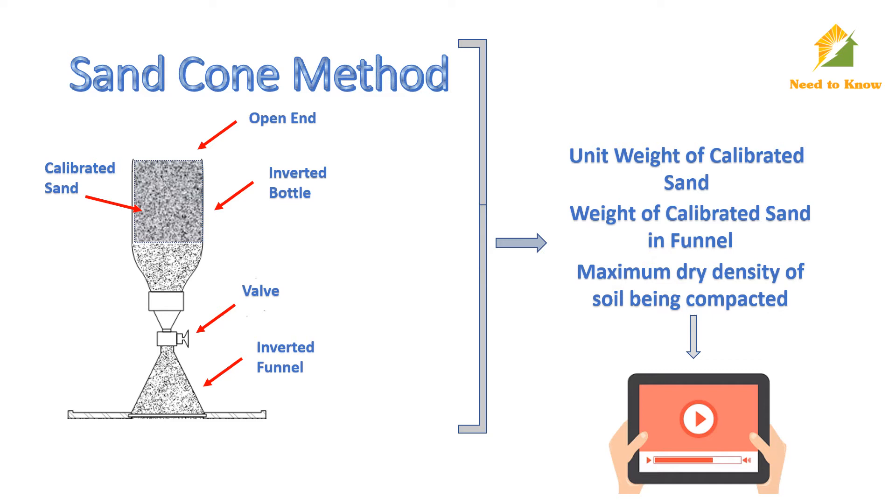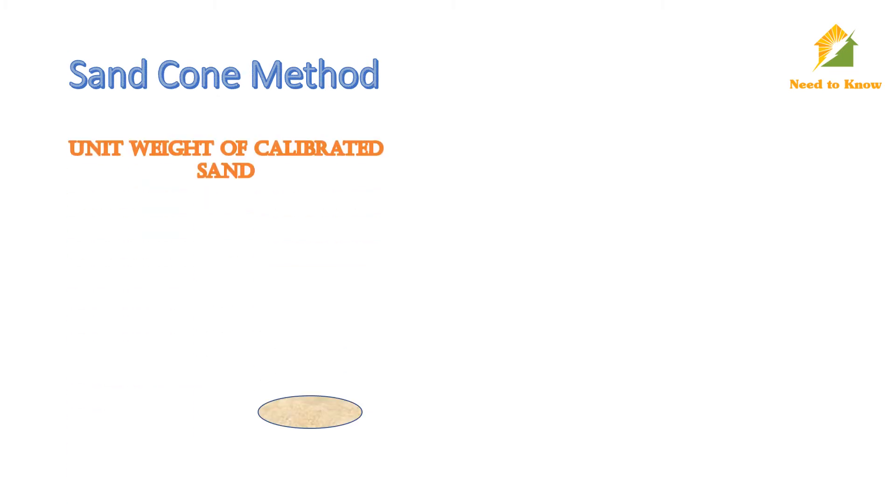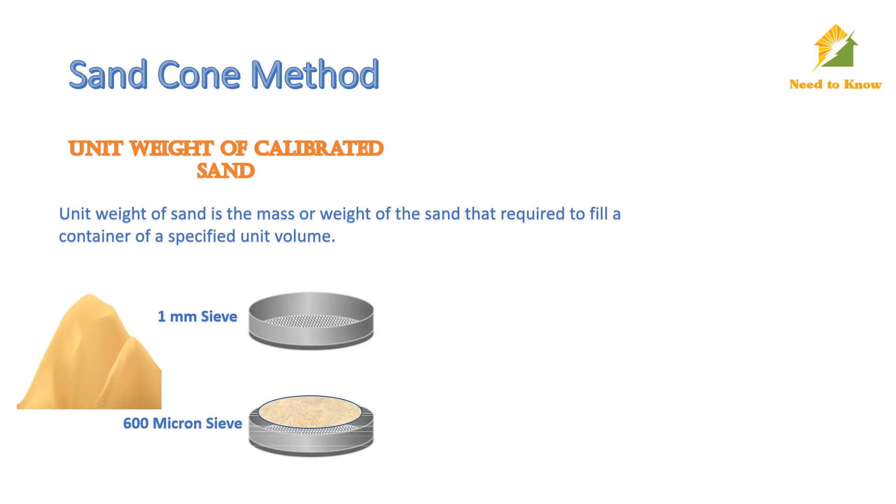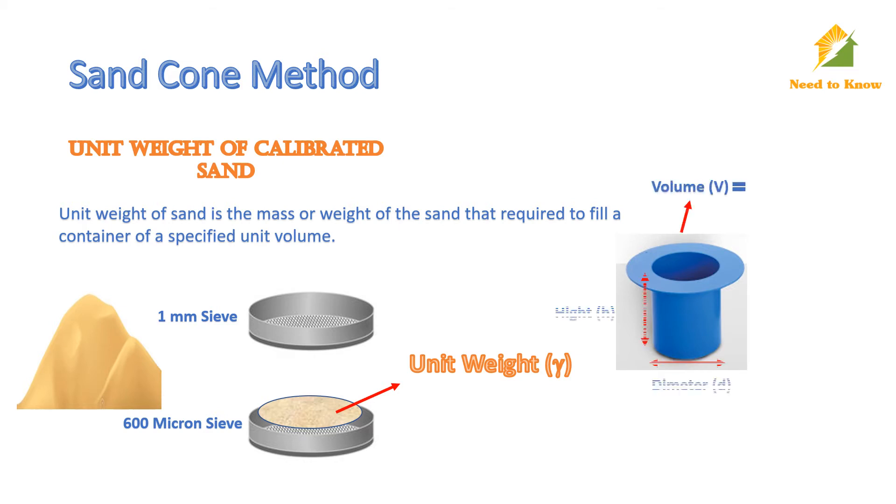Unit weight of sand may be defined as the mass or weight of sand that is required to fill a container of a specified unit volume. Take calibrated sand which is passed through one millimeter sieve and retained on 600 micron sieve. Now we measure the unit weight of this sand. For this, we take a calibrated container and determine its volume using dimensions and some simple calculation. The volume of calibrated container is roughly 1000 cubic centimeters.